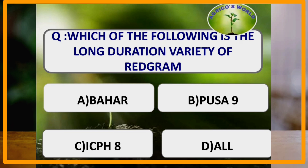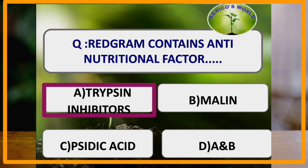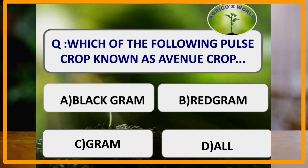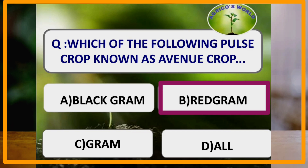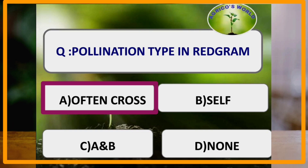Which of the following is a long duration variety of red gram? Bahar is extensively grown in Bihar for the Rabi season and it is a long duration variety of red gram. Red gram contains which anti-nutritional factor? Red gram contains trypsin inhibitor. Red gram is known as evanucrop. Pollination type in red gram: red gram is an often cross-pollinated crop, with generally 10–40% cross pollination occurring.